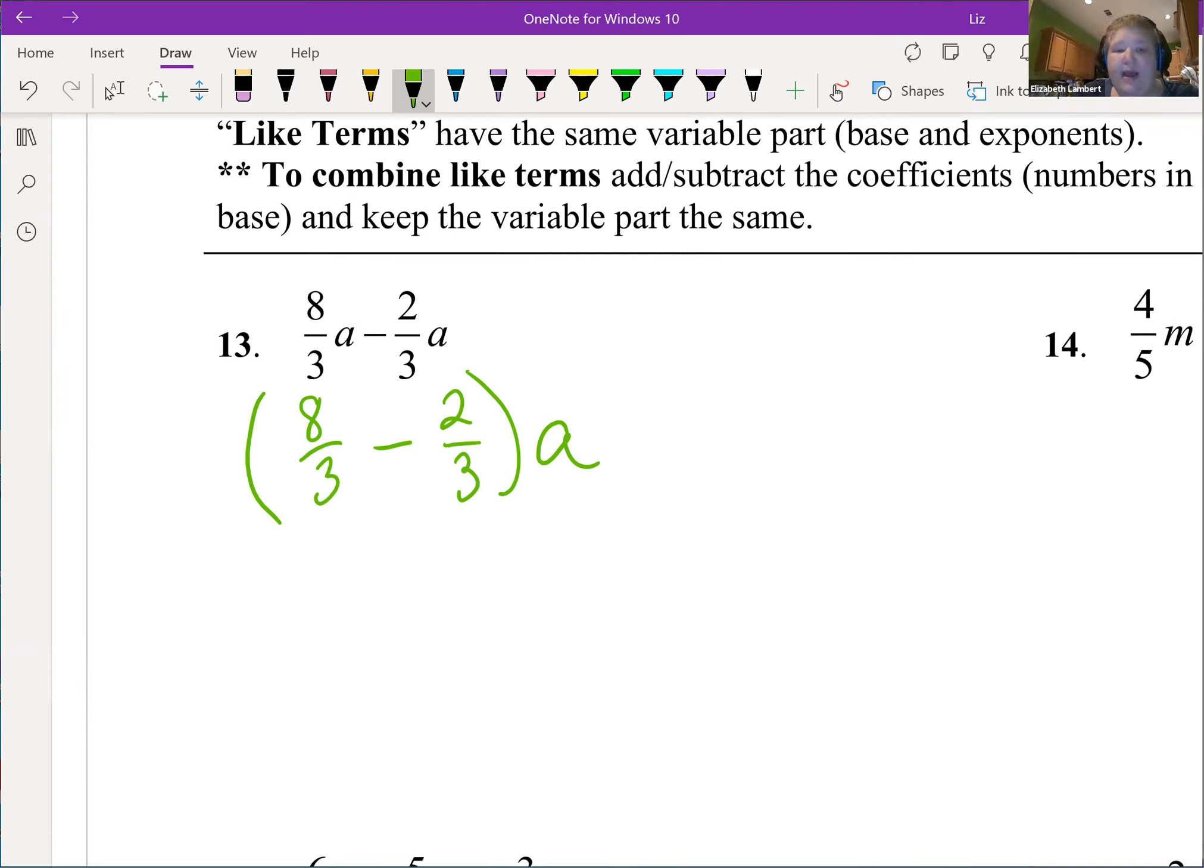Now my number parts are in the parentheses and my common letter is outside. So these can be combined because it was the same letter that I factored out. So eight thirds minus two thirds is six thirds, which is actually just two. So all that work for two apples.